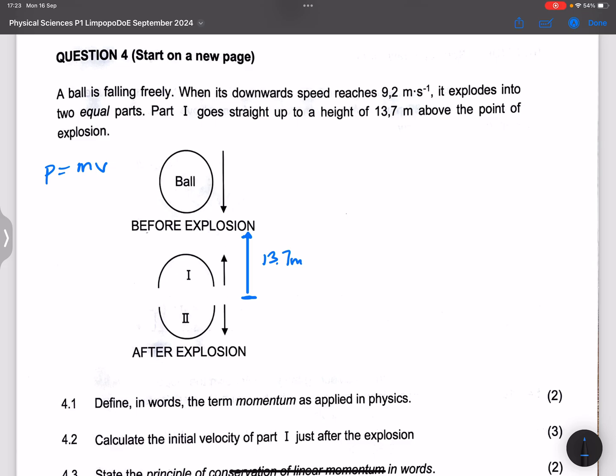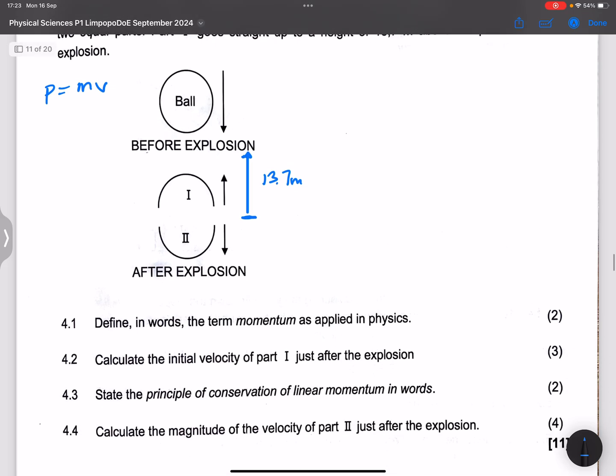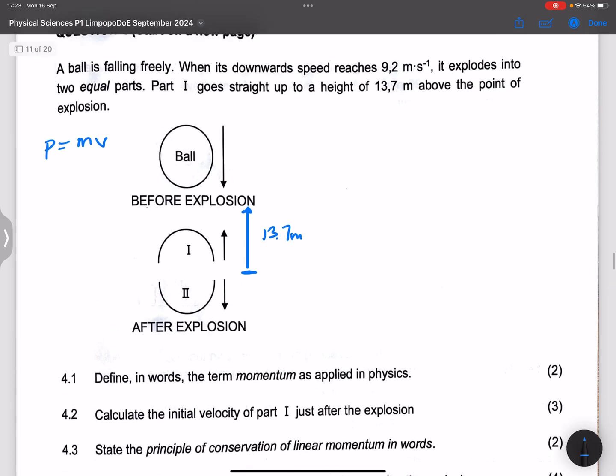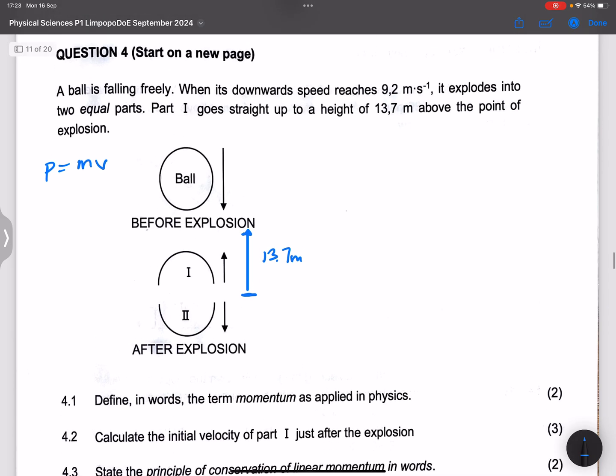The next question says calculate the initial velocity of part one just before the explosion. So what we're going to do is we know that this ball must have been moving at 9.2 meters per second.